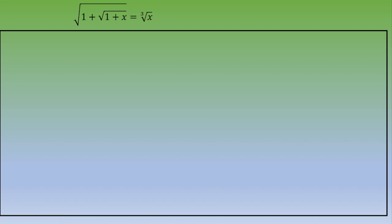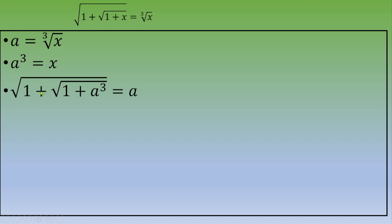When you have such an equation to solve, a good approach is to set a new variable. Let's call a equal to the cubic root of x. Then x equals a cubed. We plug this into the original equation and obtain: square root of (1 plus square root of (1 plus a cubed)) equals a.